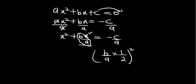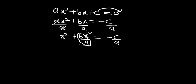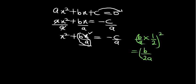After doing that, you're going to add it to both sides — add it to the left-hand side and also to the right-hand side. So we have b over a multiplied by 1 over 2, and we square it, giving us b over 2a, squared. We add this b over 2a squared to both the left-hand side and the right-hand side.